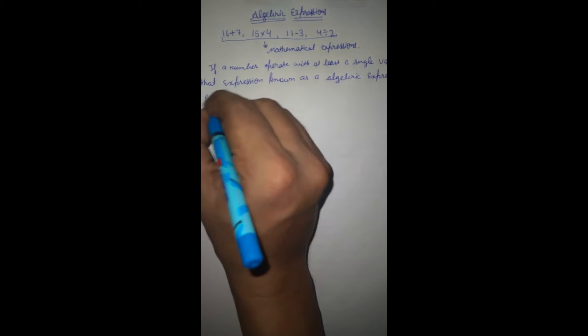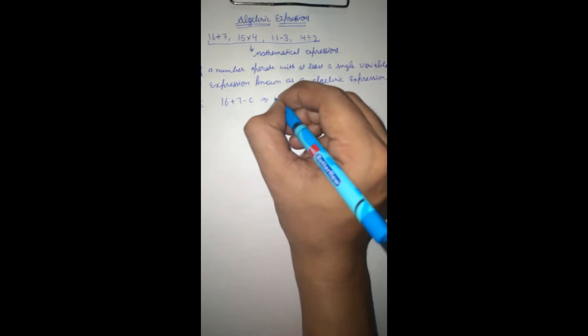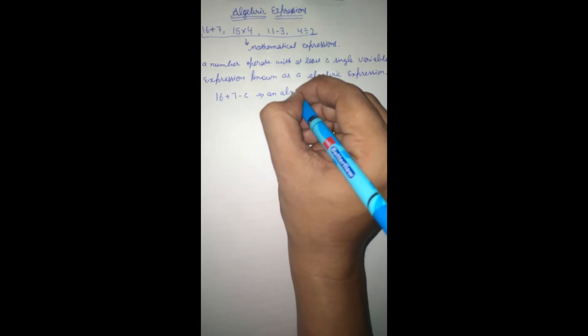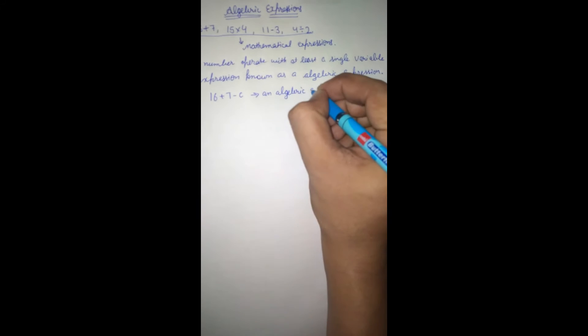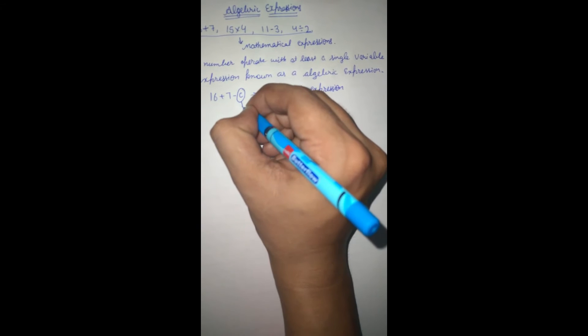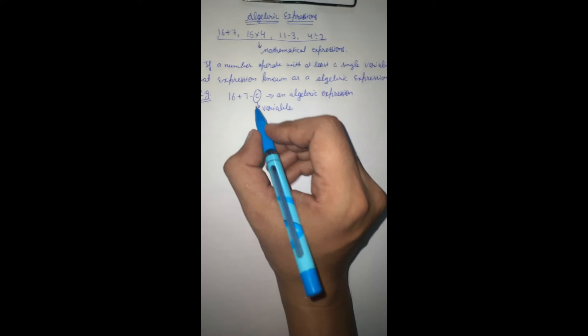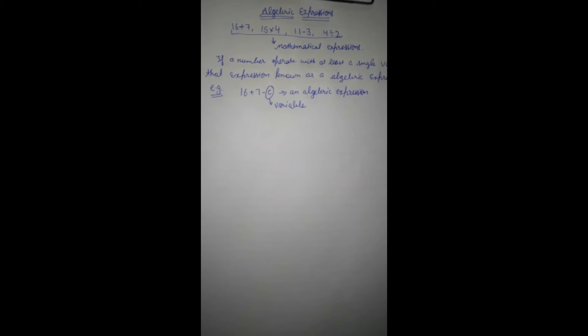Is that clear? Example of this, like 16 multiply 7 minus c. This is an algebraic expression because c is a variable. We have not an exact value of c. The value of c is depending upon the situation or equation. So this is an algebraic expression because it includes a variable.